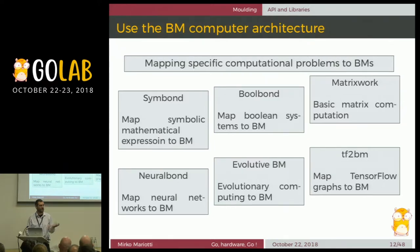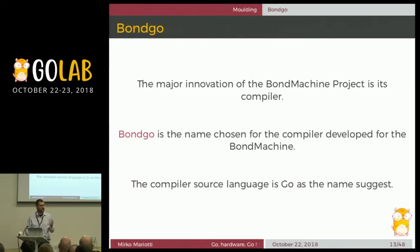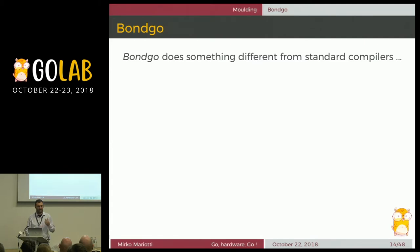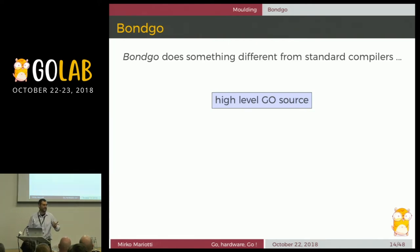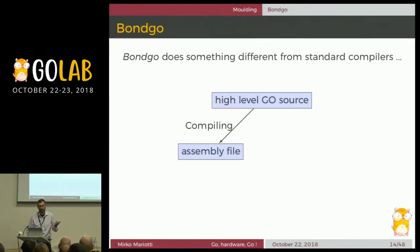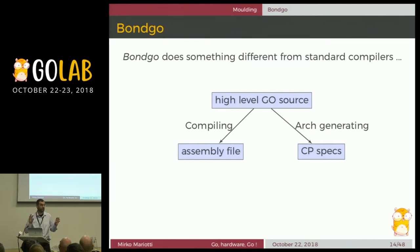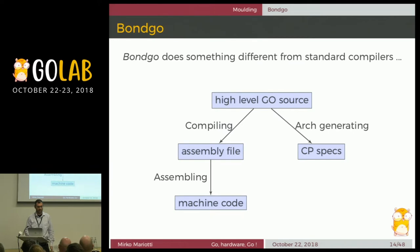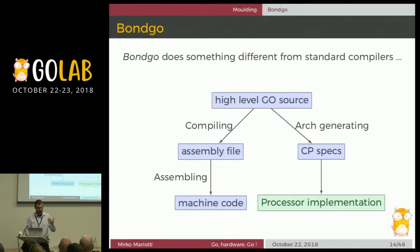But the thing you are all interested in is Go. The major innovation is the compiler. We wrote a compiler named Bongo. This compiler does something different from other compilers — it takes a Go source code, of course with many limitations, and it creates an assembly file for a machine that it also creates. So the compiler creates the assembly and creates the machine in the form of code to put on an FPGA. The architecture becomes part of the compilation process.